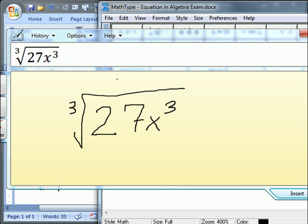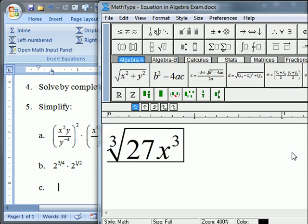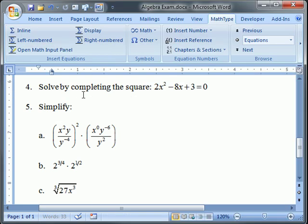The preview window shows me that's what I'm going to get. When I click Insert, it goes into MathType, and if I need to make any changes I could have made them in the Input Panel, I can make them here. Since they are correct, I'm going to close MathType and the equation goes into my Word document.